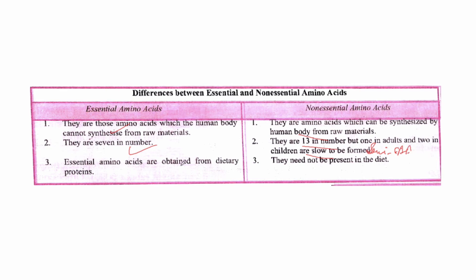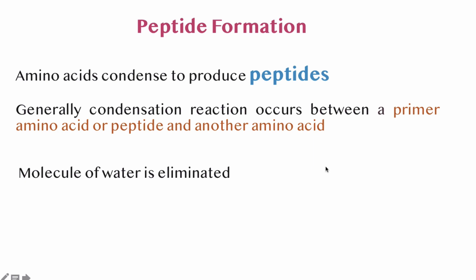Essential amino acids are those the human body cannot synthesize from raw materials, while non-essential amino acids can be synthesized by the human body. Essential amino acids are seven in number; non-essential amino acids are 13 in number. One in adults and two in children are slow to form, making them semi-essential. Essential amino acids must be obtained from dietary proteins, while non-essential amino acids need not be present in the diet.